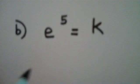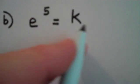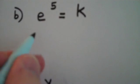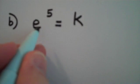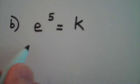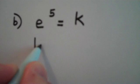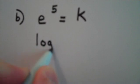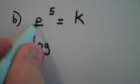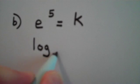The next problem we have here is e to the fifth power equals k. This is currently written in exponential form. If I want to convert this to log form, I write log. Notice the base up here is e, that's Euler's number, so log base e.